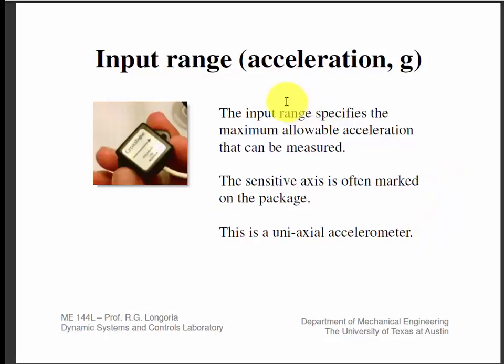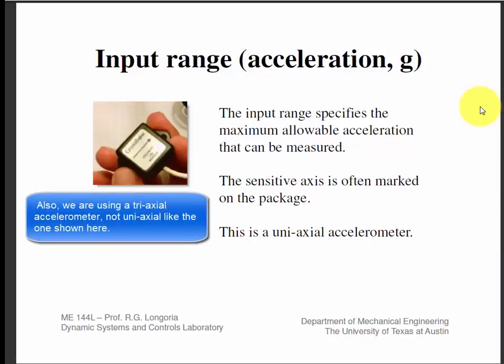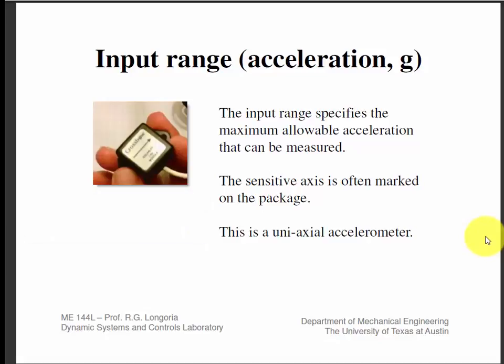Input range—make sure you look at that spec. It tells you the maximum allowable acceleration. This shows a single-axis accelerometer example. The accelerometers we're using for the current lab have a range of 4G, so it's not real high. 4G is about 40 meters per second squared, but we usually think of it in terms of g's. Make note of that maximum range.